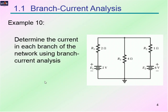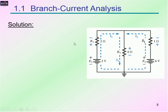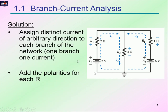Going back to the example, we can see there are three branches in this circuit and we are trying to solve the current in each branch. We need to develop three equations. First, we assign distinct currents of arbitrary direction to each branch, then add polarities for each resistor. The current flows from positive to negative polarity — so R1 has positive polarity at the bottom and negative at the top. Same goes for R3, R2, E1, and E2.